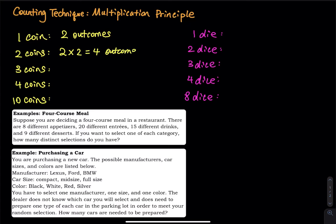What about three coins? The first coin has two faces, the second coin has two faces, the third coin has two faces. You multiply them and the total is eight. What about four coins? That will be two by two by two by two, which is equal to 16.